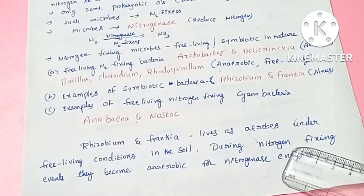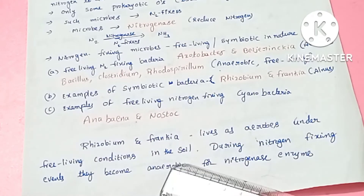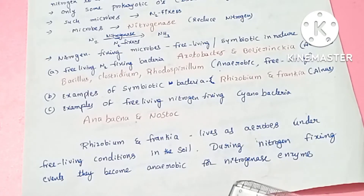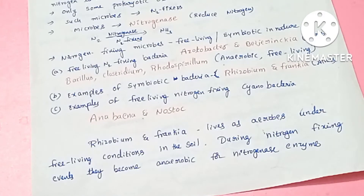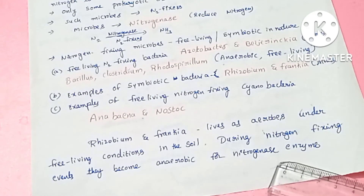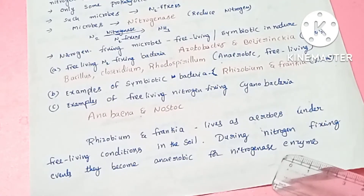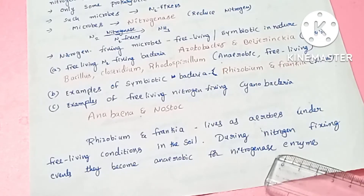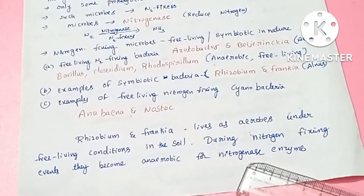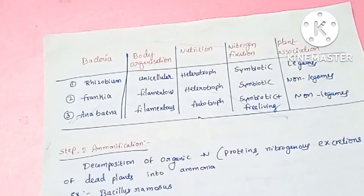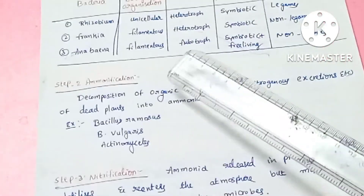Rhizobium and Frankia are aerobic organisms in normal soil in free-living form. However, when they enter a plant and form a symbiotic relationship, they shift to anaerobic conditions. This is because the nitrogenase enzyme is sensitive to oxygen — nitrogenase is inactivated by oxygen — so nitrogen fixation must occur under anaerobic conditions.